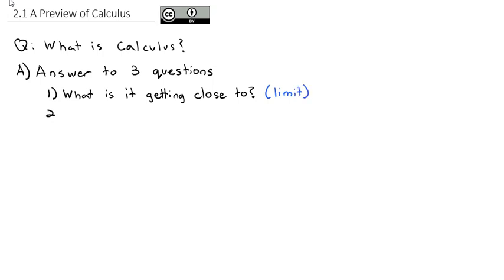The second question we're going to attempt to answer — and it's really the focus of Chapter 3 — is: what is the slope? Specifically, what is the slope at a given point? And there, we're going to call that in calculus the derivative.